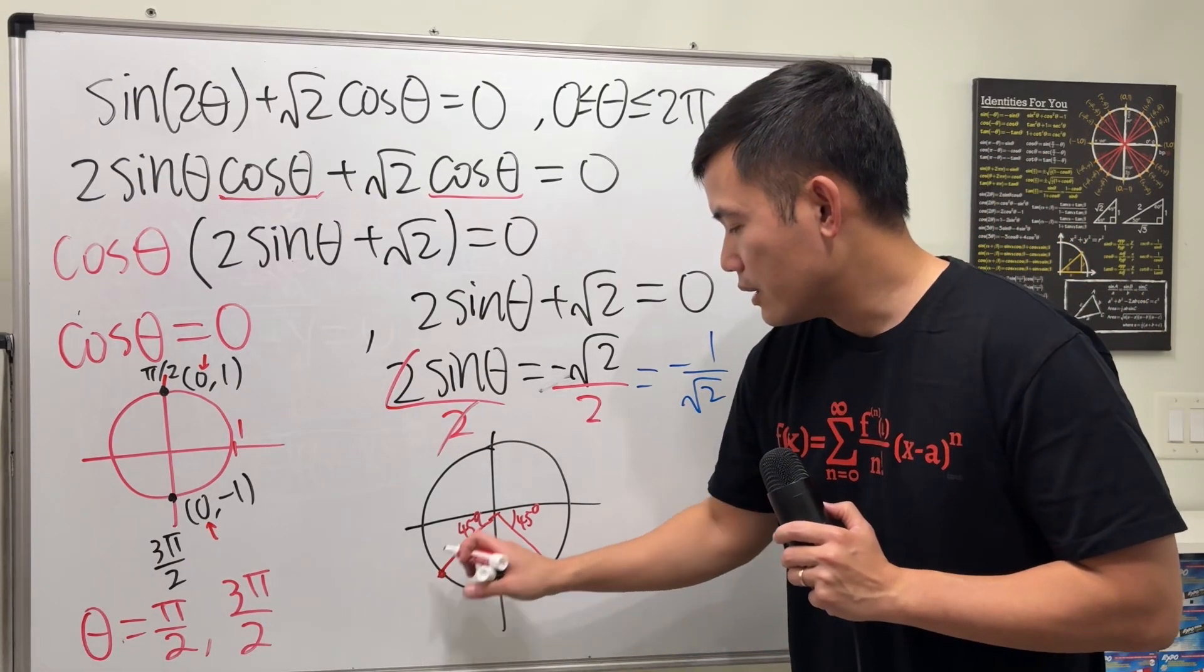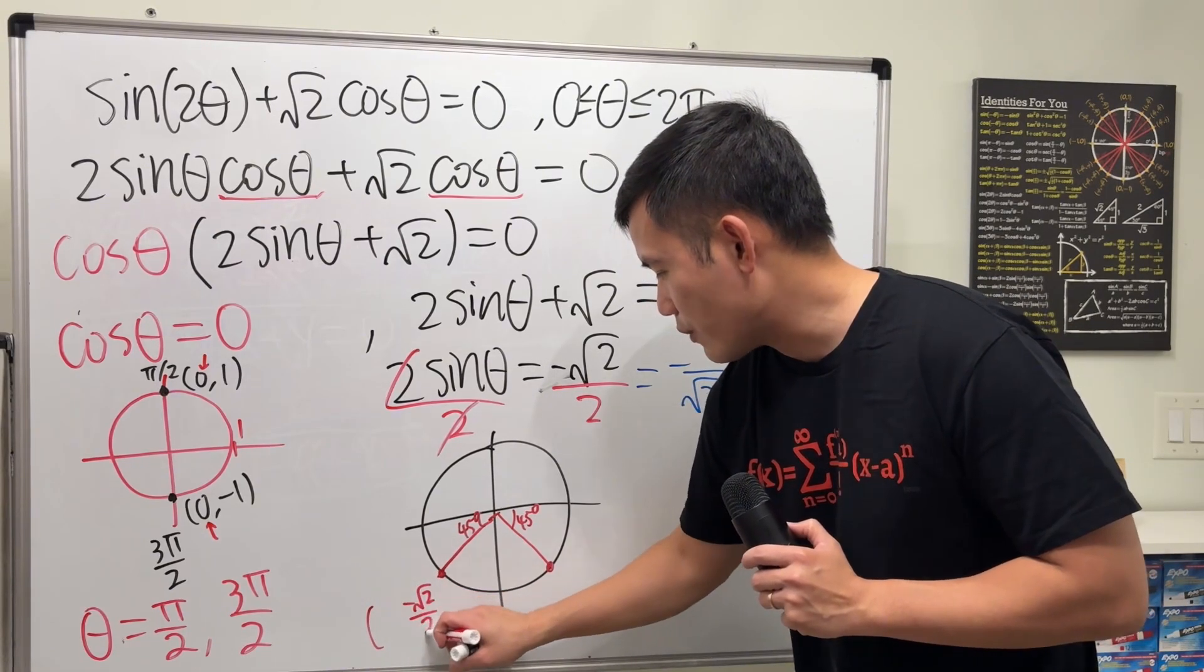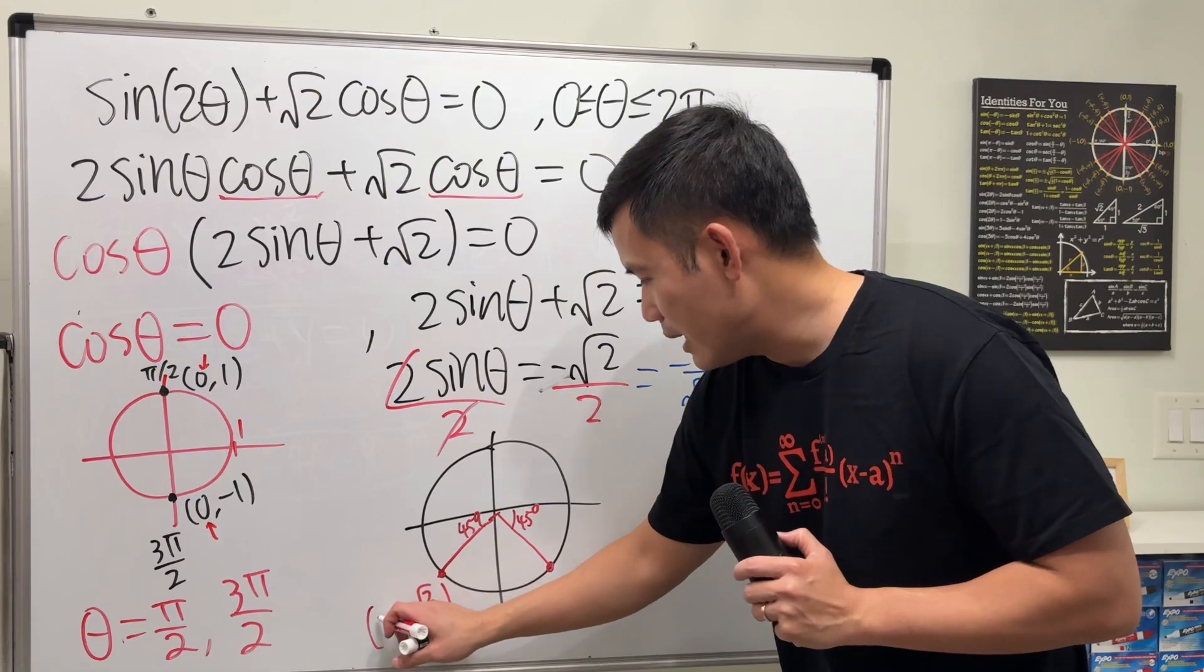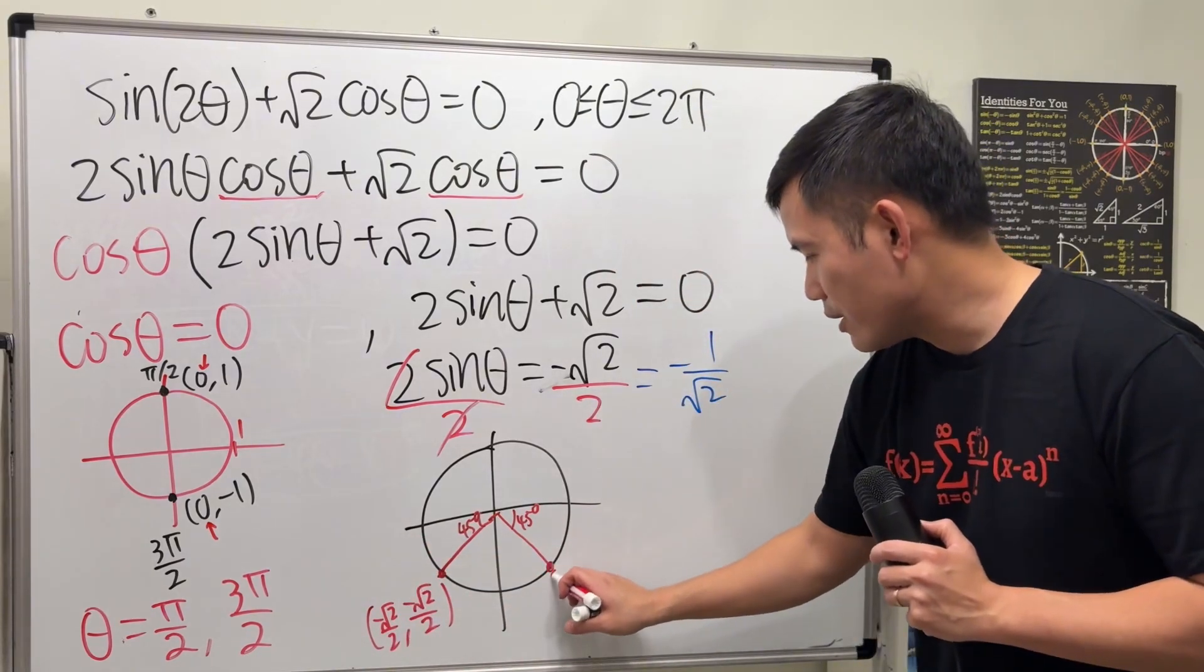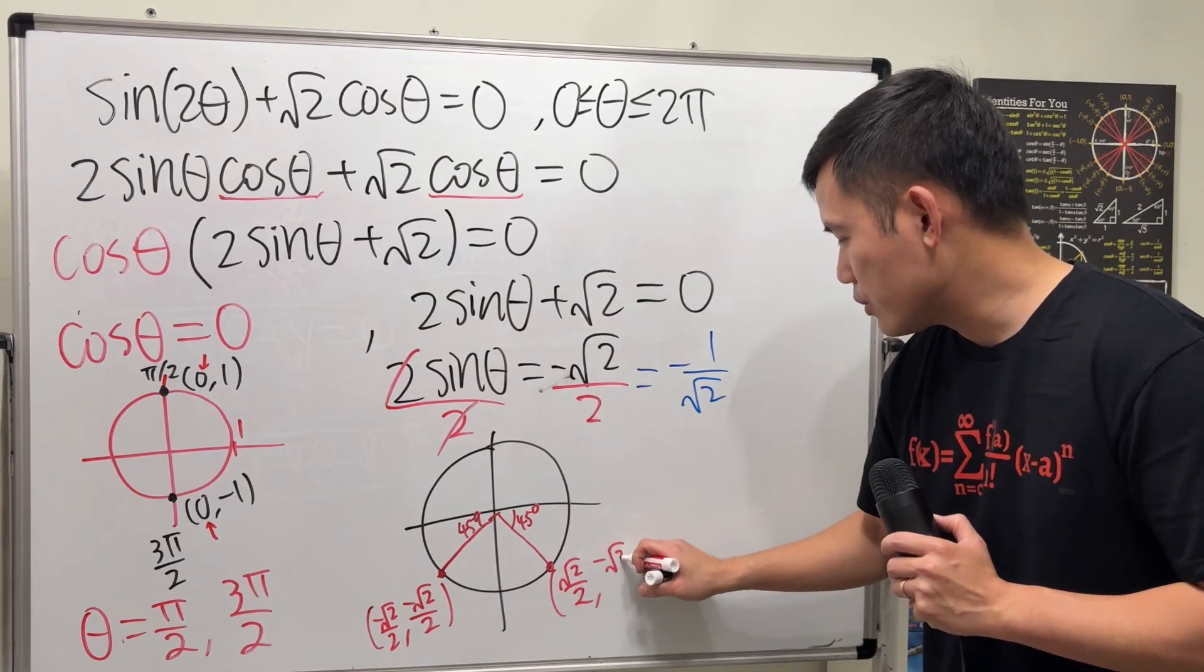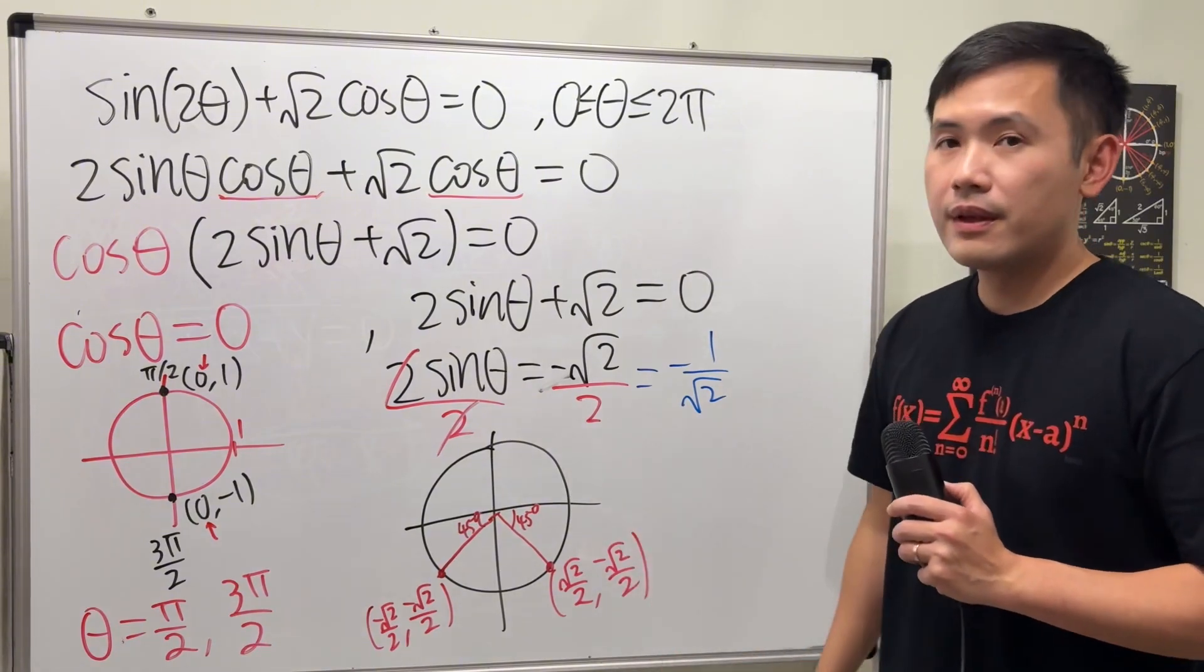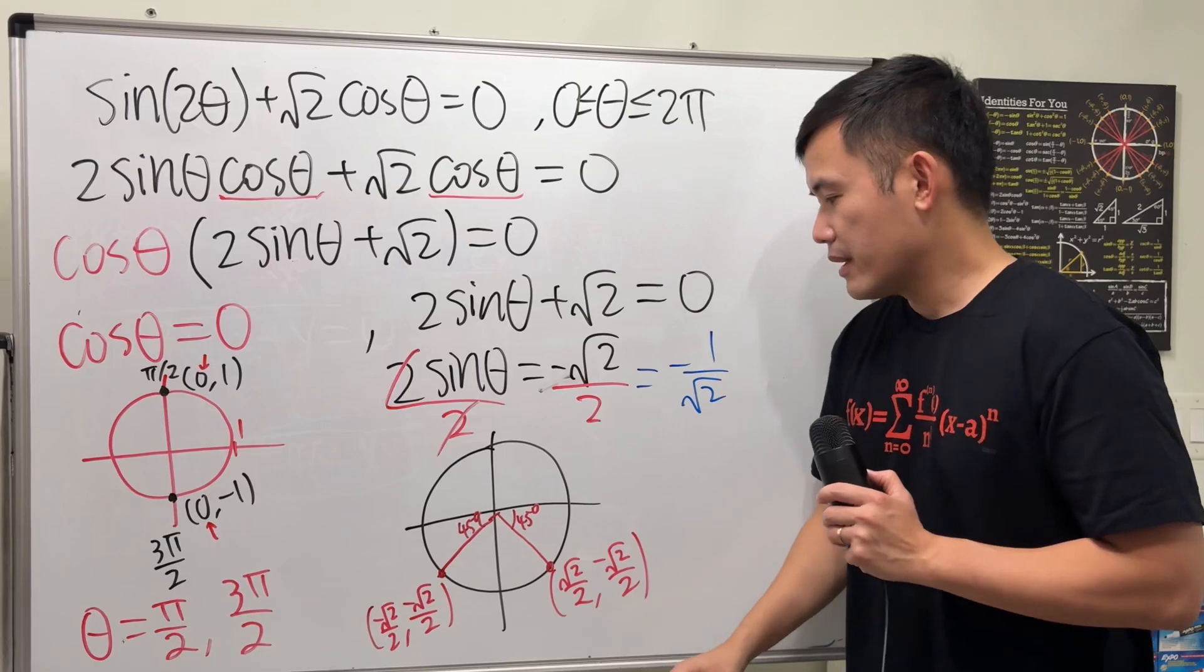Now to answer this right here, by the way, the y value is negative square root of 2 over 2. Same thing for the x though, for that. But for this one right here, the x is positive square root of 2 over 2. And the y is negative square root of 2 over 2. And you could have used this number right here instead. Doesn't really matter.